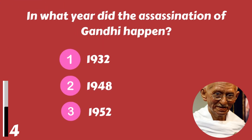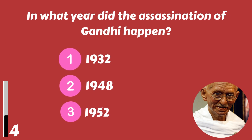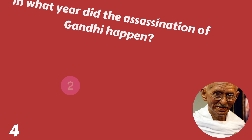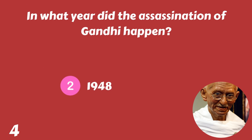In what year did the assassination of Gandhi happen? 1932, 1948, or 1952? Gandhi was assassinated in 1948.